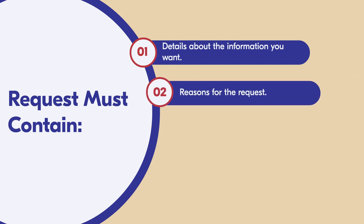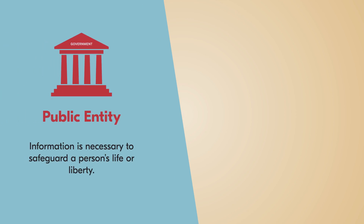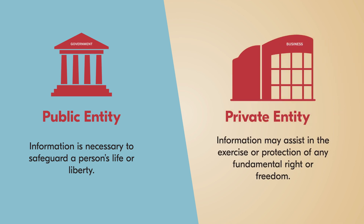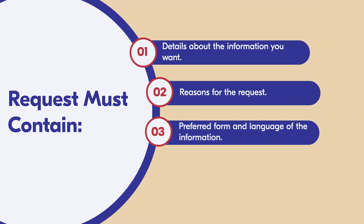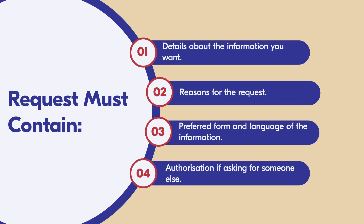Two: reasons for the request, especially if the information is necessary to safeguard a person's life or liberty, or if it's a request to a private entity for information that may assist in the exercise or protection of any fundamental right or freedom. Three: the preferred form and language you would like to receive the information in. And four: if you are requesting information on behalf of someone else, an authorization from that person.